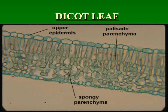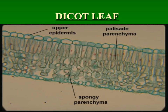Here we have a dicot leaf. It still has the adaxial and the abaxial surface and our cuticles. The way we tell this is a dicot leaf is because there are two types of mesophyll present: we have column-shaped mesophyll cells called palisade, and then circular ones called spongy mesophyll. That's how we differentiate between our monocot and our dicot.